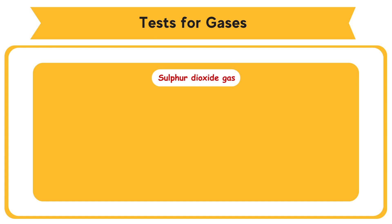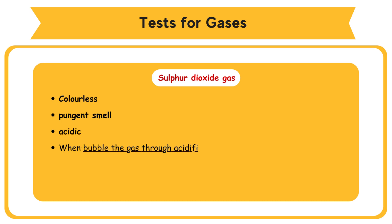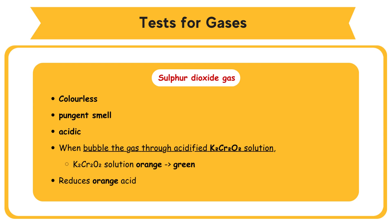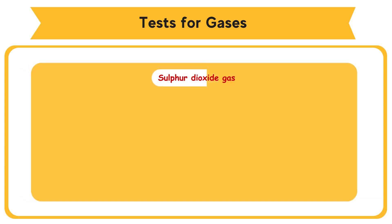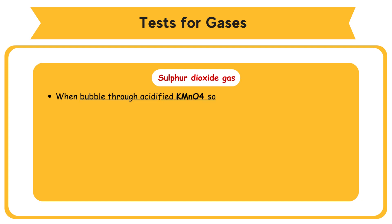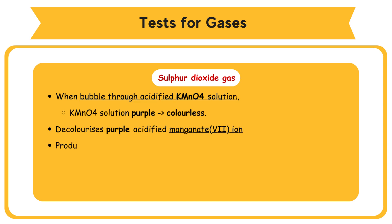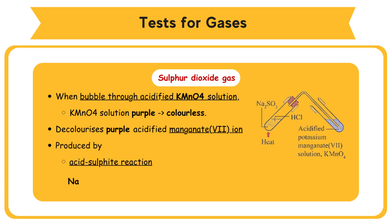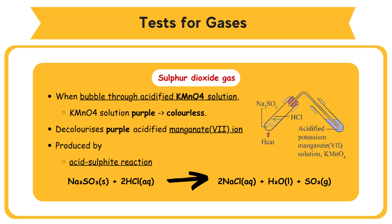Sulfur dioxide gas is colorless, has a pungent smell, and is acidic. When bubbled through acidified K2Cr2O7 solution, the orange solution turns green, reducing dichromate ion to green chromium-3 ion. When bubbled through acidified KMnO4 solution, the purple solution turns colorless, decolorizing the manganate(VII) ion. It is produced by an acid-sulfite reaction: Na2SO3 (solid) + 2HCl (aqueous) → 2NaCl (aqueous) + H2O (liquid) + SO2 (gas).